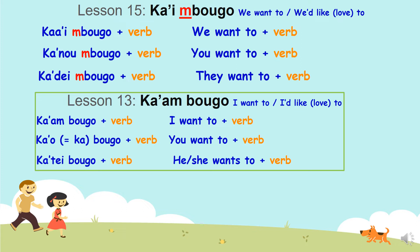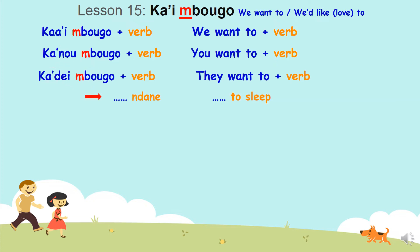Ka imbugo, ka numbugo, ka dembugo. To say we want to sleep: ka imbugo dan. You want to sleep: ka numbugo dan. They want to sleep: ka dembugo dan.